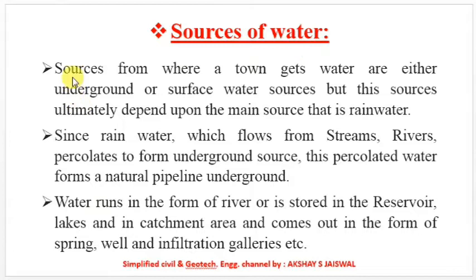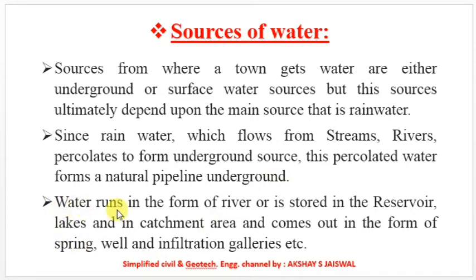Sources of water: a town gets water from either underground or surface water sources. These sources ultimately depend upon the main source, which is rainwater. Rainwater flows from streams and rivers, and percolates to form underground sources. This percolated water forms a natural pipeline underground. Water runs in the form of a river or is stored in reservoirs, lakes, and catchment areas, and comes out as springs, wells, and infiltration galleries.